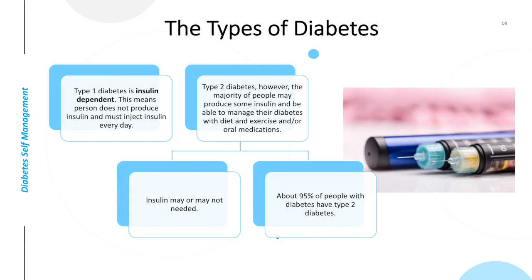There are two most common types of diabetes. Type 1 diabetes is insulin-dependent, meaning the person does not produce insulin and must inject insulin every day. In type 2 diabetes, however, the majority of people may produce some insulin and be able to manage their diabetes with diet and exercise and/or oral medications. Insulin may or may not be needed. About 95% of people with diabetes have type 2 diabetes.